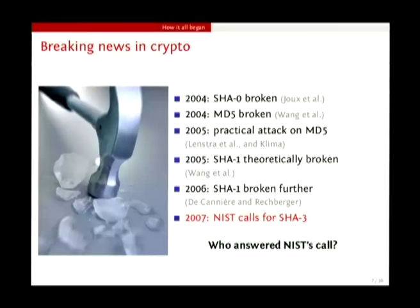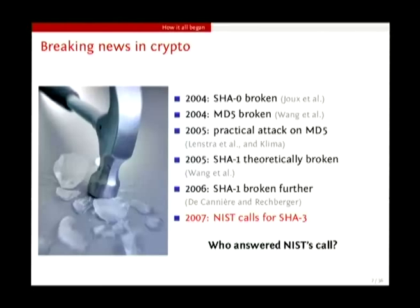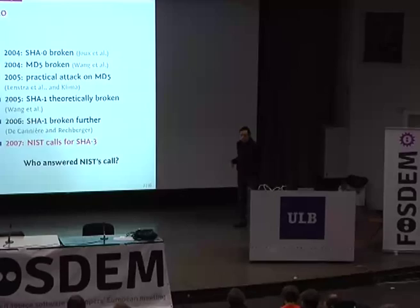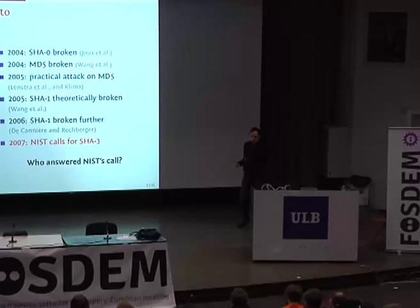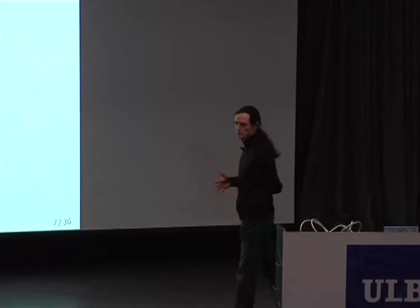Recently there have been some breaking news in crypto — and breaking is usually bad for crypto. In 2005, and starting before, we had bad news about MD5, which has been broken and then broken practically, meaning we can produce collisions with an expensive computer. We had the same with SHA-1, where today we only have a theoretical break — it's not really practically broken, but we might think that in the future it will be. The problem is that SHA-2, the next variant of SHA-1, is very similar to SHA-1 and MD5, and NIST was afraid a break would come for SHA-2 as well.